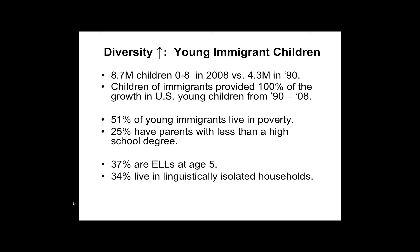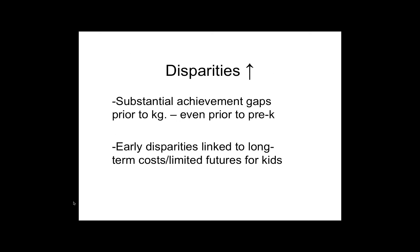Quite a number of these children have parents with low levels of education and tend to be English language learners or dual language learners. What we're learning — and it's being corroborated in study after study — is that the achievement gap we highlight in school reform efforts, beginning with assessments of kids in fourth grade, begins very, very early. In fact, it begins to be documented with statistically significant differences well before children enter typical pre-K programs at age 3 or 4.